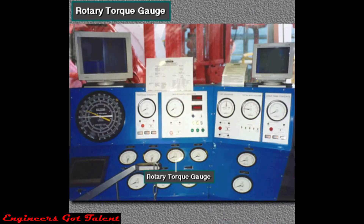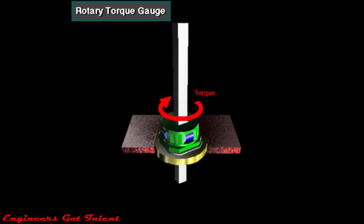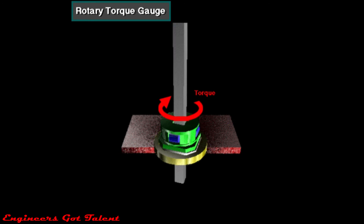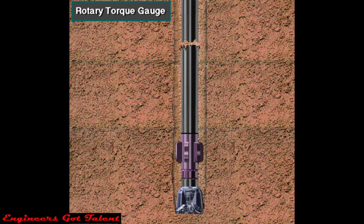Drillers use the rotary torque gauge to see how much twisting force, or torque, the rotary is applying to the drill string. Knowing rotary torque helps keep drillers from parting the drill string because of too much rotary torque. Parting the drill string in this manner is called twisting off.